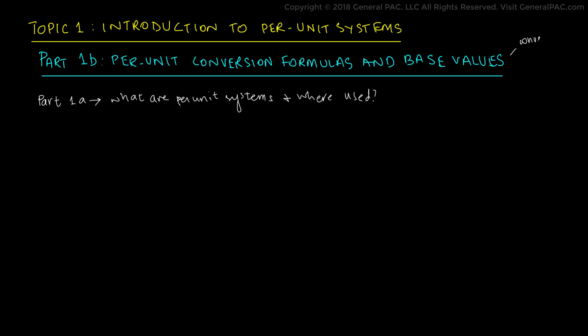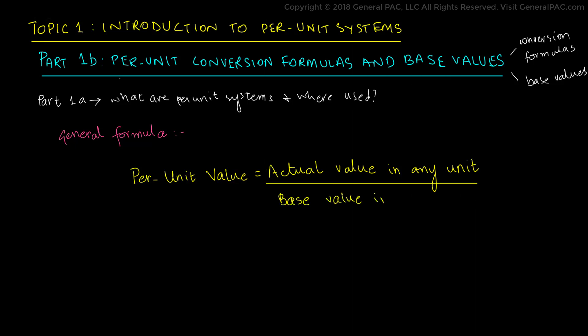In this video, Part 1b, we will be discussing the formulas for converting values into their per unit equivalents and we will also have a look at the term base values. The general formula that is used to calculate per unit values is that the per unit value is equal to the actual value in any unit divided by the base value in any unit.